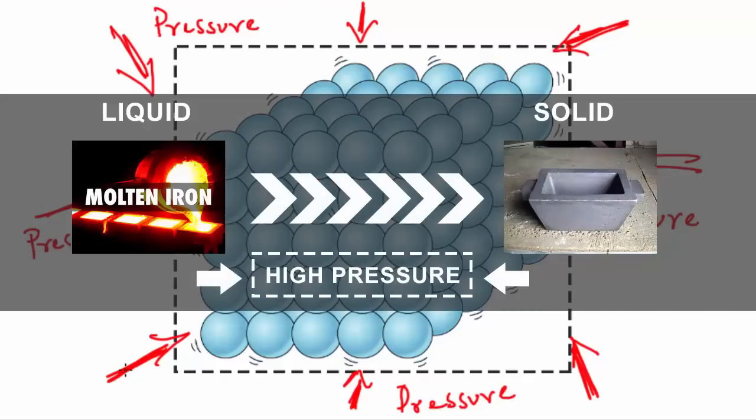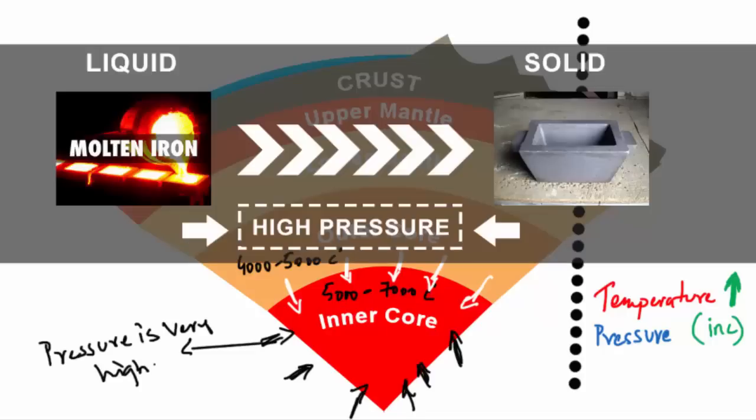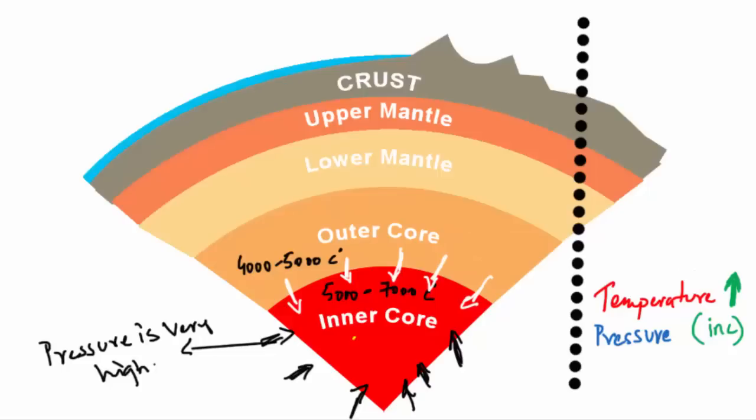Now when you understand this, think about this: as you go deeper in the Earth, both temperature and pressure increase. Although the inner core is very hot, it is solid because it is experiencing very high pressure. The pressure is so great that the metals are squeezed together to not be a liquid.